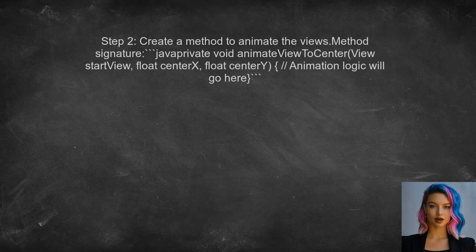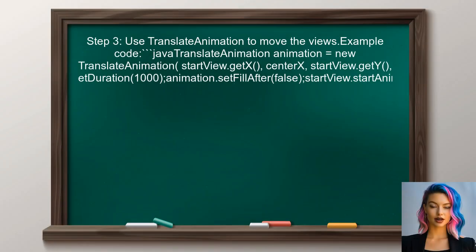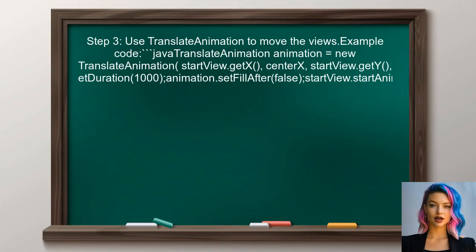Next, the user should create a method to animate the views. This method will take the starting view and the calculated center coordinates as parameters. Inside the animation method, the user can use the TranslateAnimation class. They should set the start and end coordinates based on the view's current position and the center coordinates.